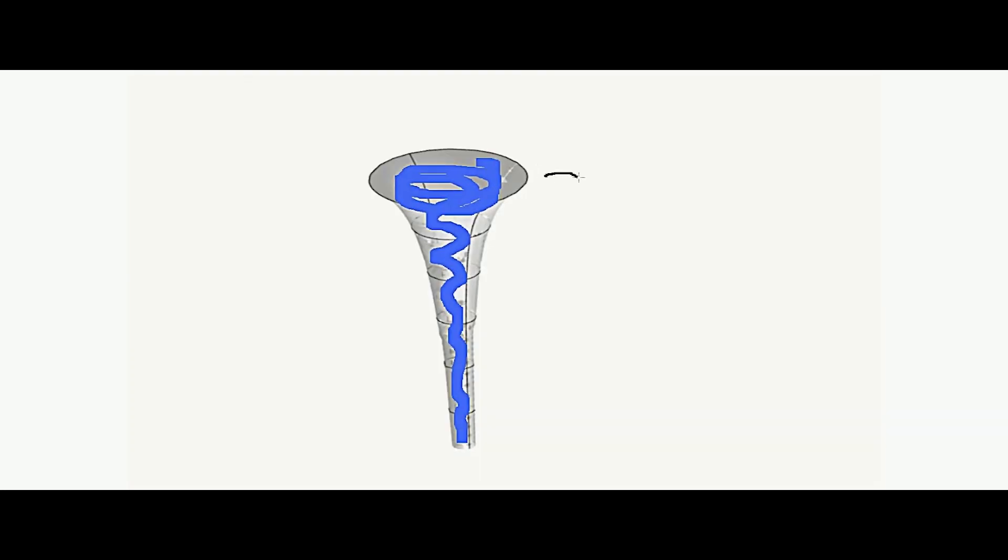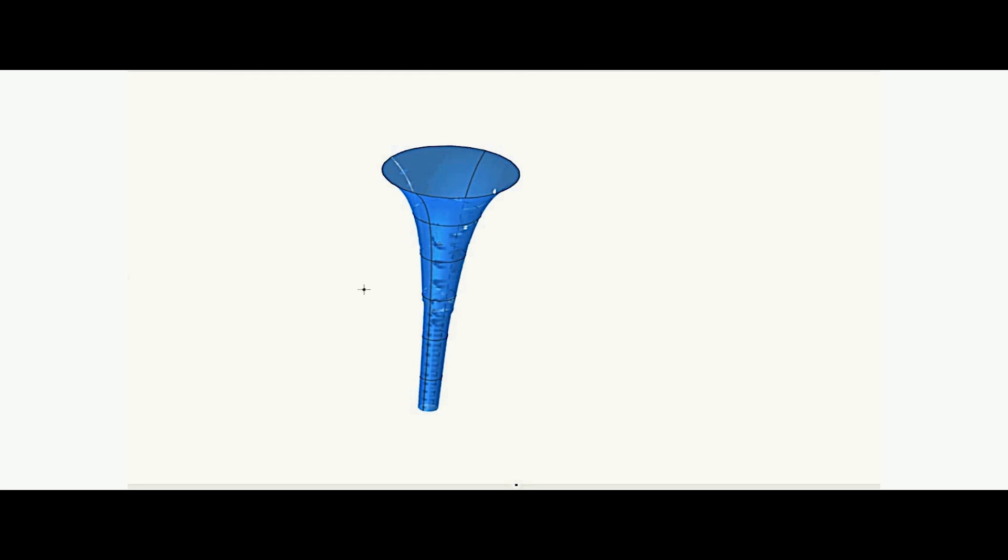When you turn a bucket filled with paint upside down the interior of the bucket of course stays coated with the paint. It's the same here. The paint was touching the entire interior surface of the horn. So when you empty the horn the surface will stay coated with the paint.